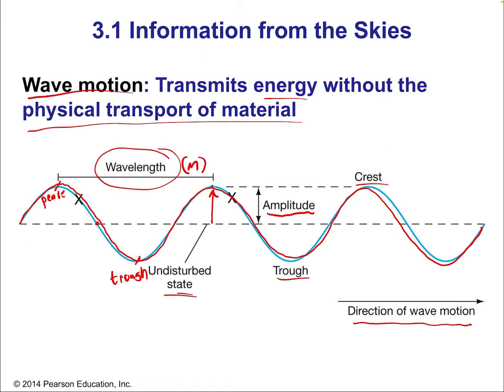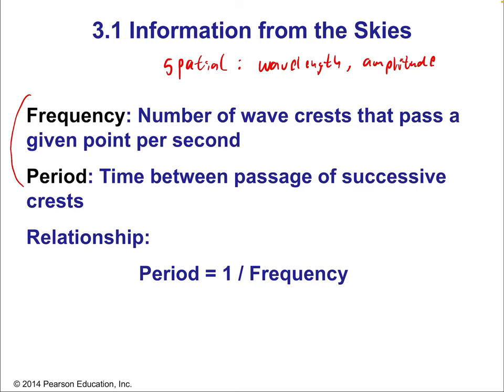If you're standing at a fixed point watching the wave move past, you could count: one crest, next crest, and count the time between those crests — just time how long it takes each crest to pass in front of you. That would be the frequency, though to be precise, the time would be the period, which has units of seconds.